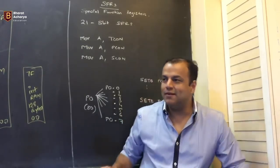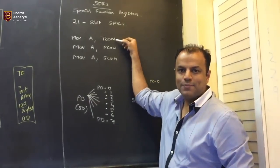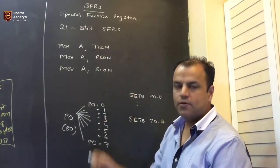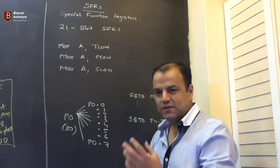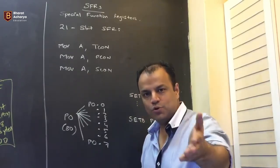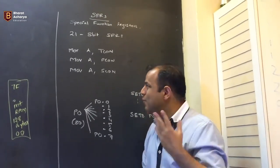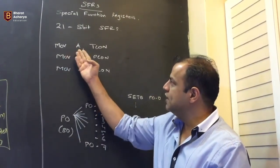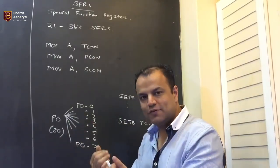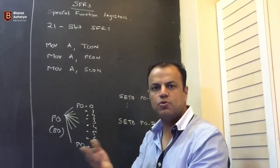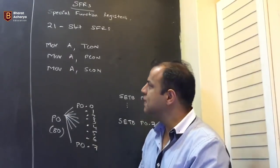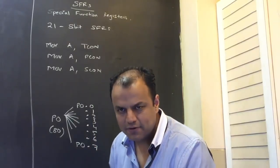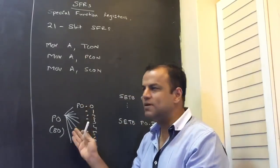Some SFRs have interesting names — TCON stands for timer control, PCON stands for power control, SCON stands for serial control, and so on. Since these registers are available to the programmer, you will use them in instructions. When you write MOV A, TCON, your intention is to take the value of TCON into the A register — to read what is in TCON. Since there are 21 SFRs, there will be numerous such instructions.